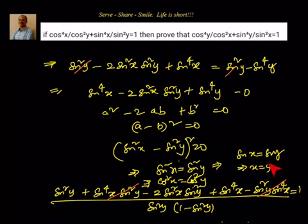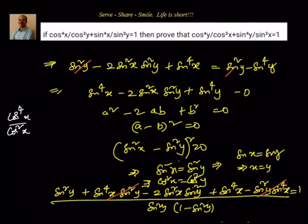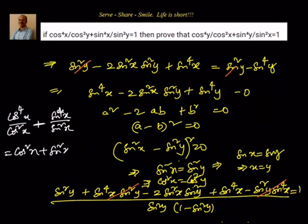So x = y — any value of x = y will satisfy both equations and both will be equal to 1. We got sin²x = sin²y, which gives cos²x = cos²y. We can convert everything into one variable: cos⁴x / cos²x + sin⁴x / sin²x = cos²x + sin²x. We know cos²θ + sin²θ = 1. So that's how we prove it equals 1.